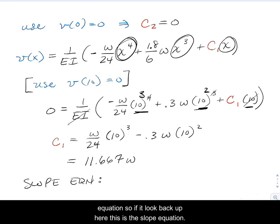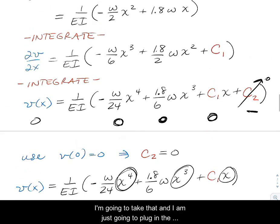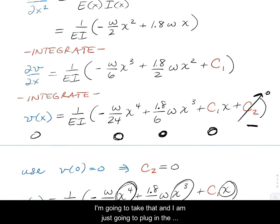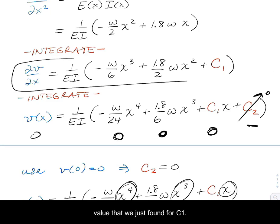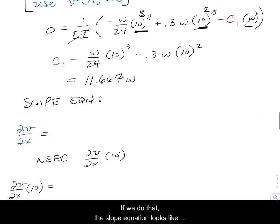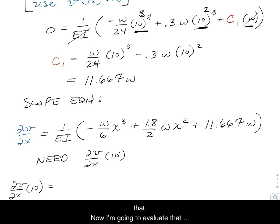Now I need to get back to the slope equation. Looking back up here, this is the slope equation. I'm going to take that and plug in the value that we just found for C1. The slope equation looks like that. Now I'm going to evaluate that equation at x equals 10 feet. When I evaluate it, I know that its value is going to have to be 0.5 degrees clockwise.